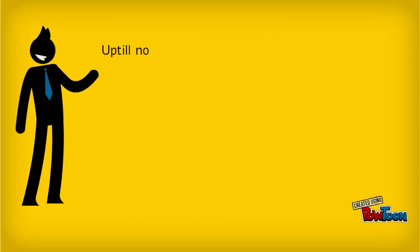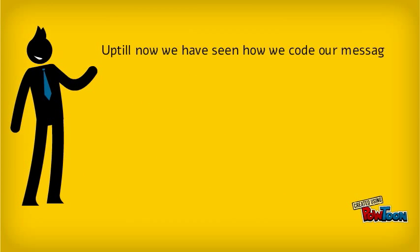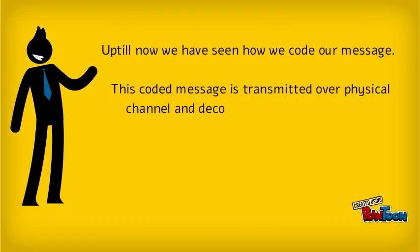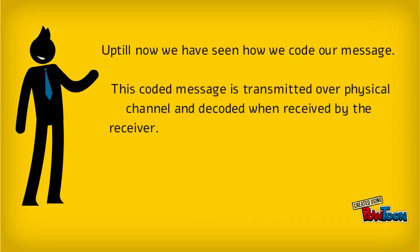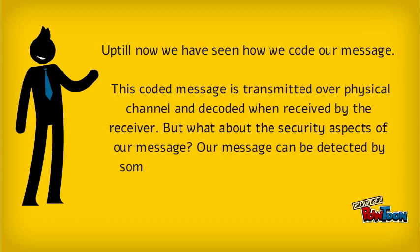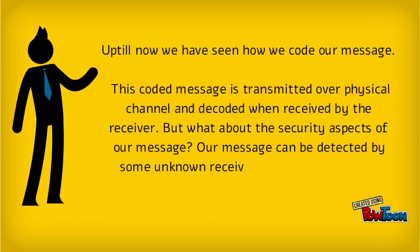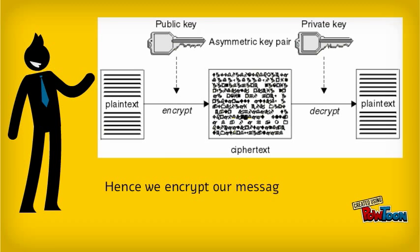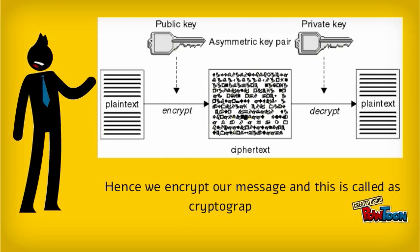Cryptographic coding: Up till now we have seen how we code our message. This coded message is transmitted over a physical channel and decoded when received by the receiver. But what about the security aspects of our message? Our message can be detected by some unknown receiver, which can affect the confidentiality of our message. Hence we encrypt our message, and this is called cryptographic coding.